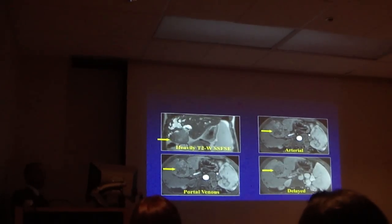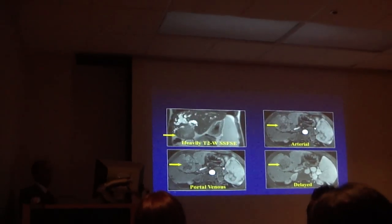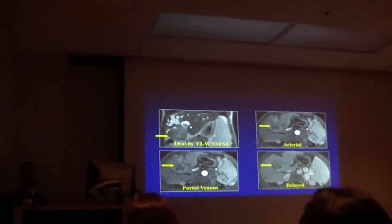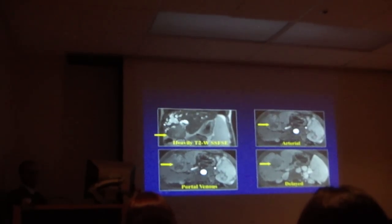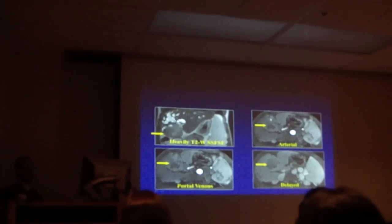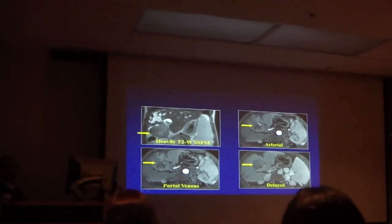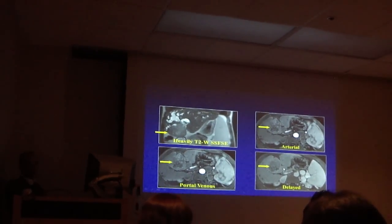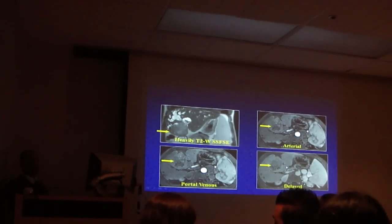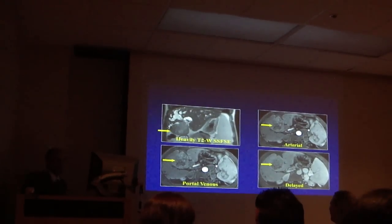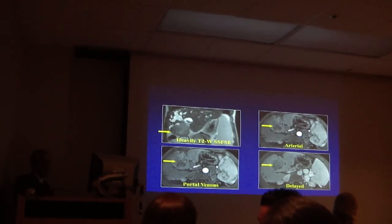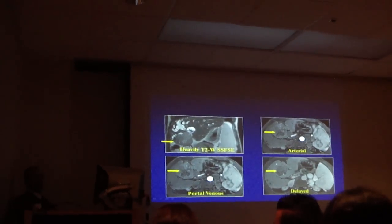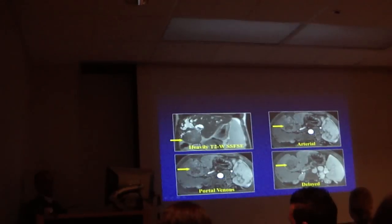On T2-weighted images you see the lesion, and you also see intrahepatic biliary dilatation on the coronal image. The lesion is heterogeneous and remains heterogeneous. The lesion remains ill-defined and progressively fills in on delayed phase. There are other lesions in the liver as well.